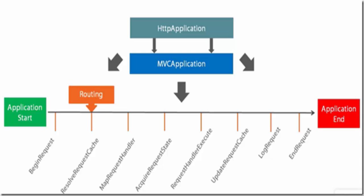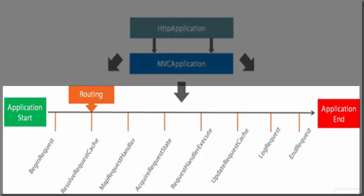As you can see from this diagram, the ASP.NET MVC application consists of the application start and application end events. In between them, there are a number of events that occur, which are as follows: first, begin request; second, resolve request cache; third, map request handler; fourth, acquire request state; fifth, request handler execute; sixth, update request cache; seventh, log request; and eighth, end request. These are the eight events that happen between application start and application end.